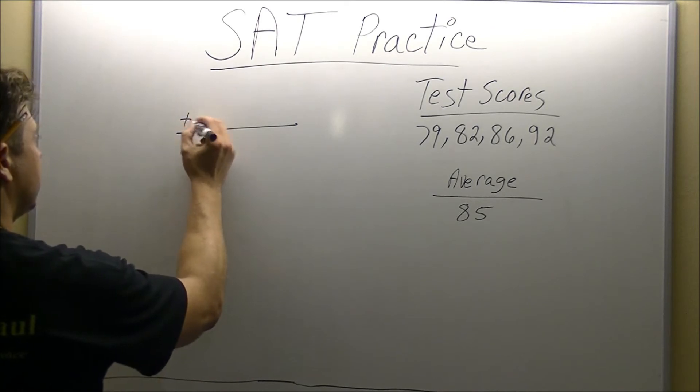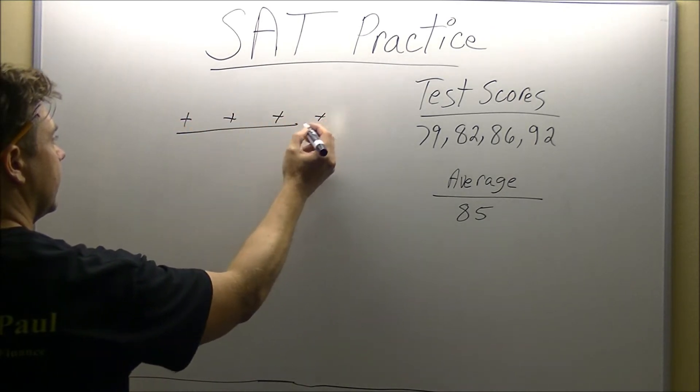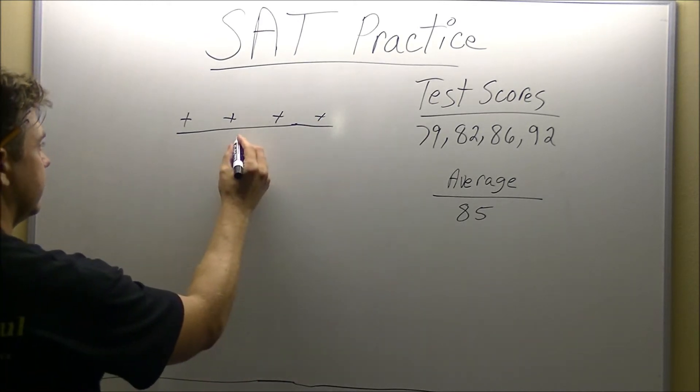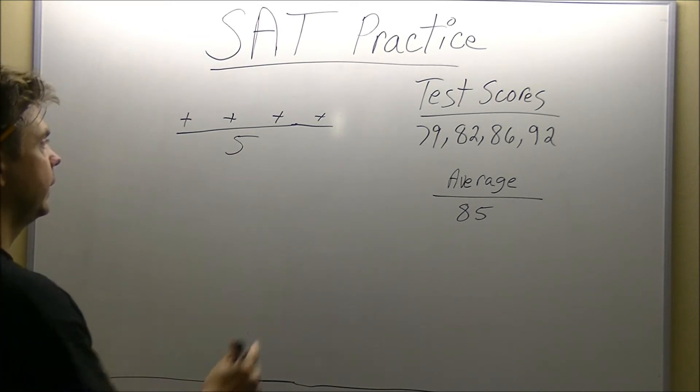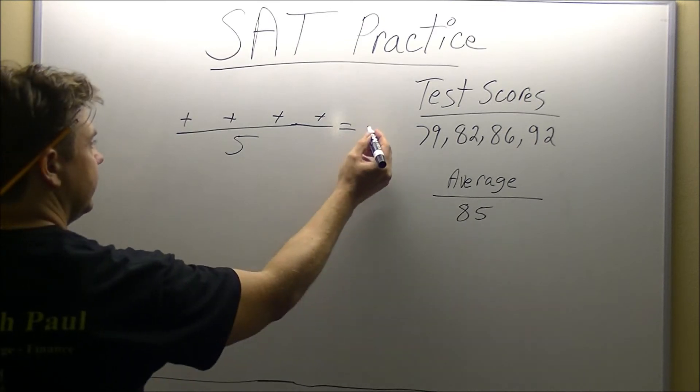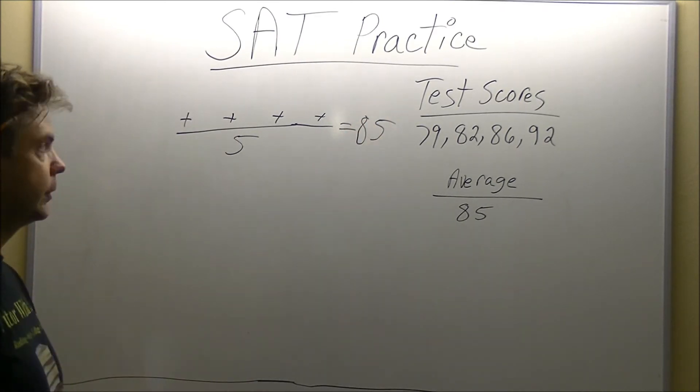We're going to put four addition signs. We also know there's going to be five tests. We're going to put our five in the denominator. We also know our average is going to be 85. So this will be the structure we're going to use.